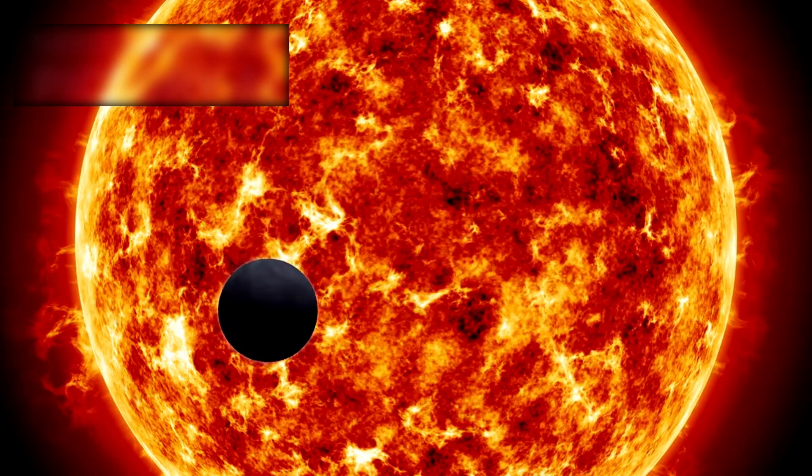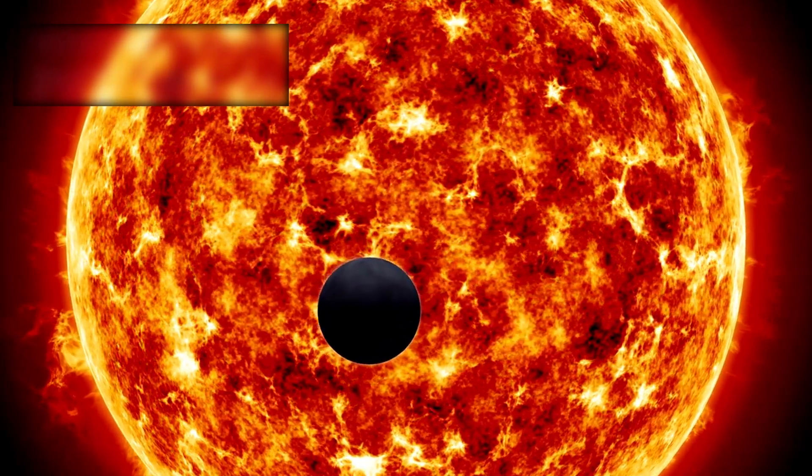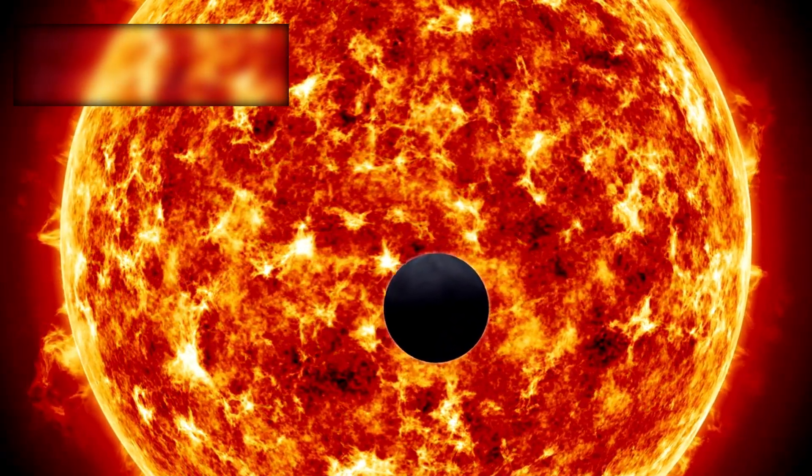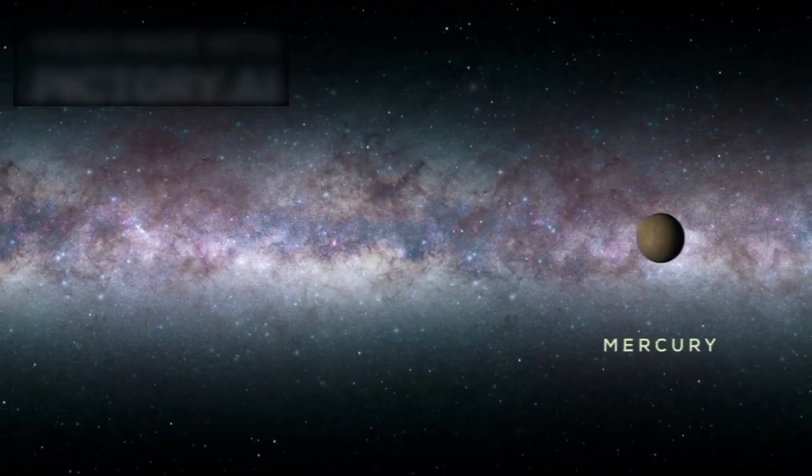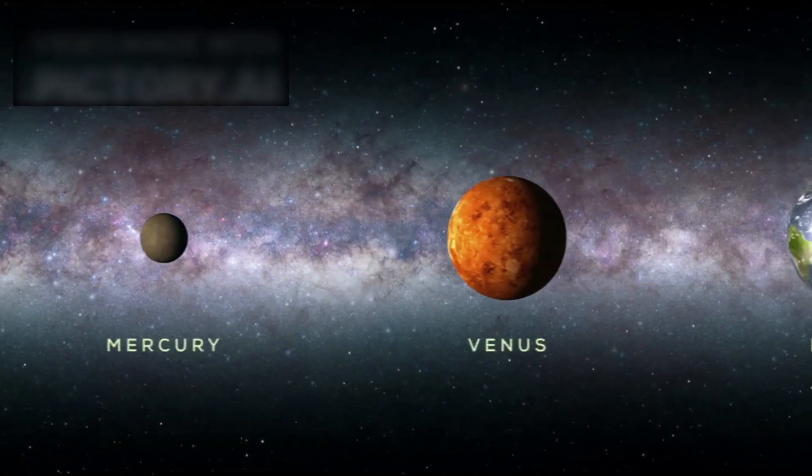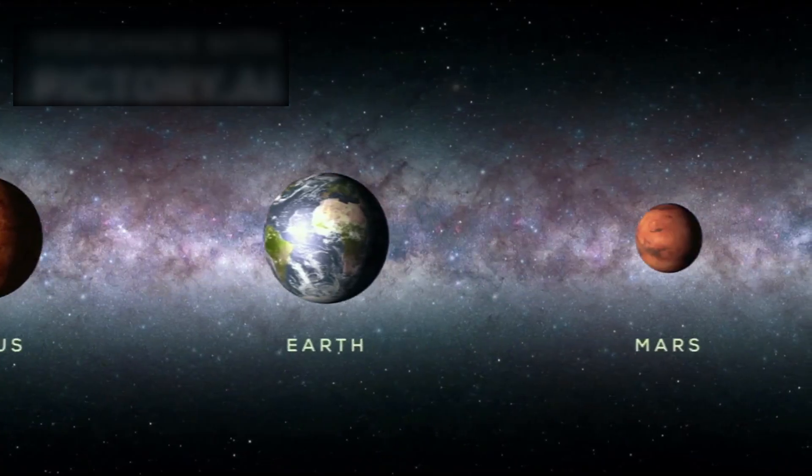K2-18b is what scientists call a Hycean world, a strange hybrid between an ocean planet and a gas-draped mini-Neptune. It is larger than Earth, with a radius 2.6 times greater and a mass nearly 8.6 times as heavy.